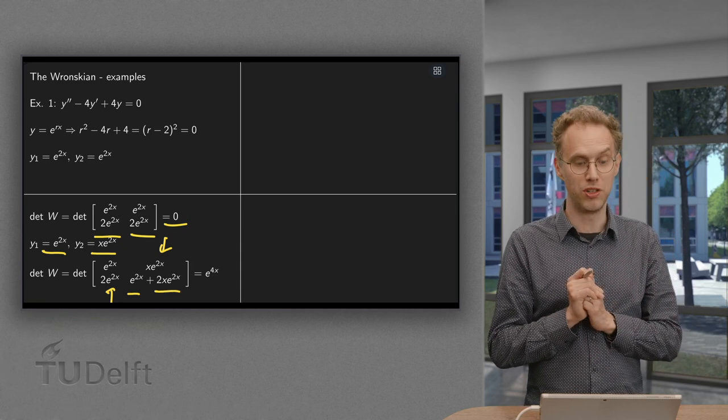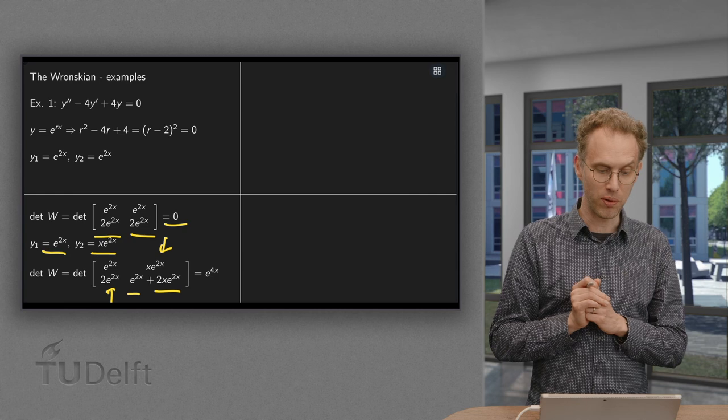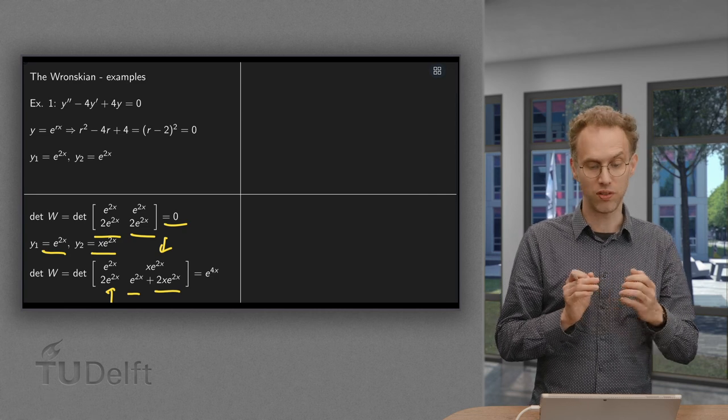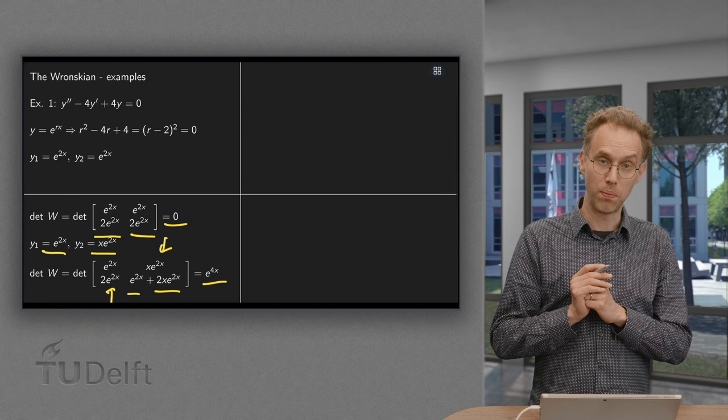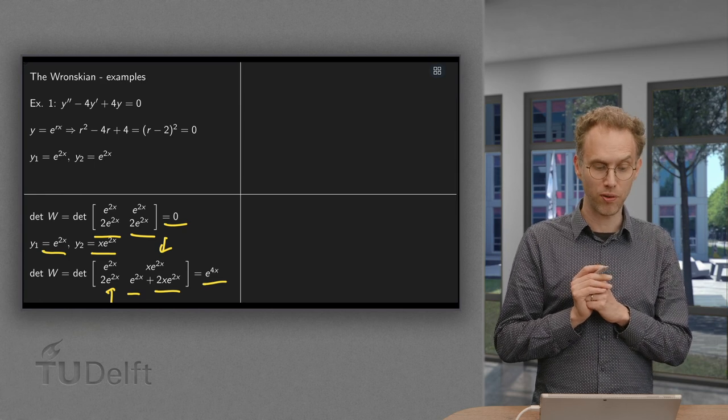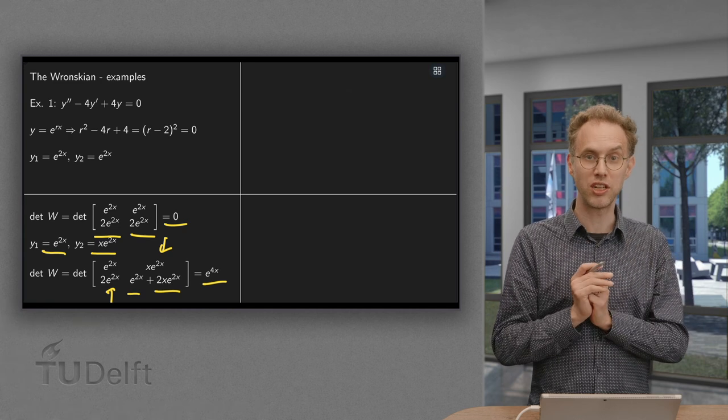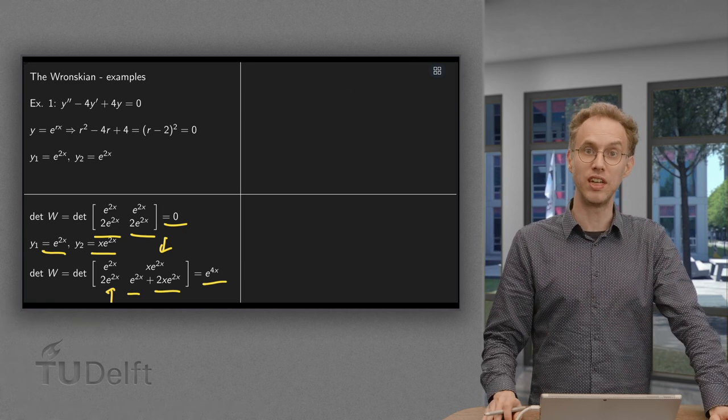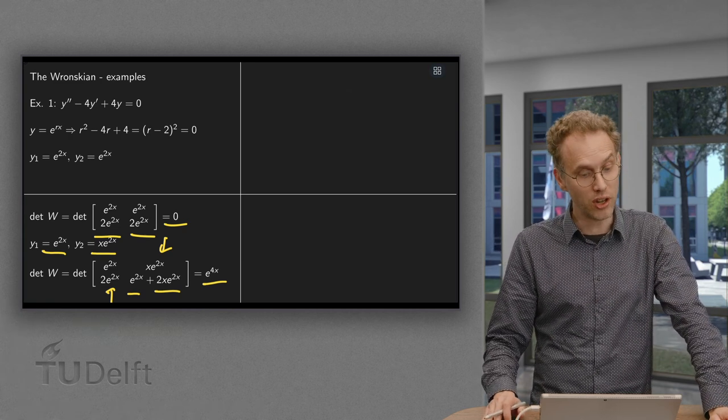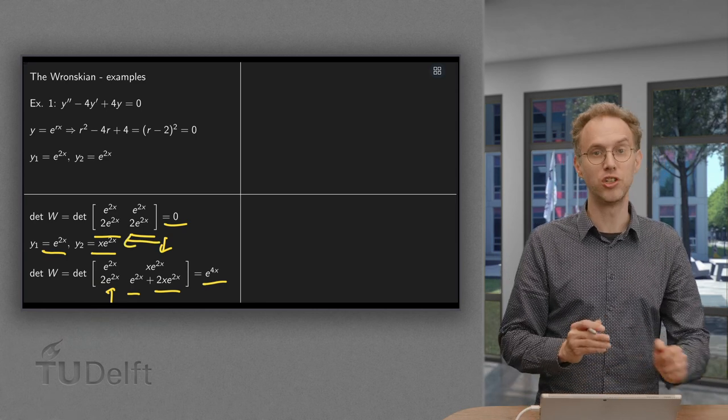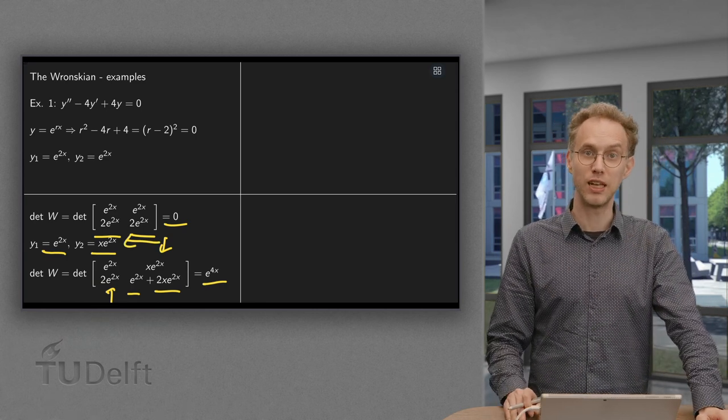And if we now compute the determinant, we get e^(2x) times e^(2x) which equals e^(4x), and we get a plus 2xe^(4x) and a minus 2xe^(4x). So those cancel out and we are left with e^(4x) which is not equal to zero, which means that these two solutions over here are in fact independent.